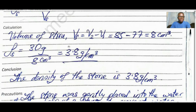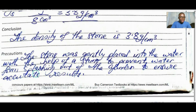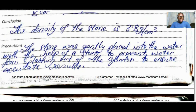Take careful note of the units. To conclude, the density of the stone is 3.8 grams per cm³. Remember you can convert this to kilograms per meter cubed. As for precautions, the stone was gently placed into the water with the help of a string to prevent water from splashing, because if some water is lost you will not get the accurate volume of the stone and your results will be faulty.